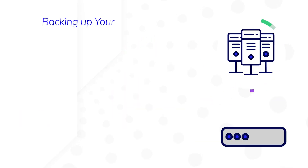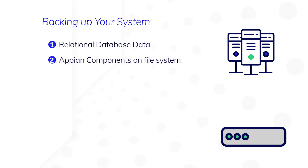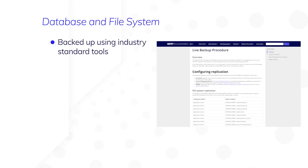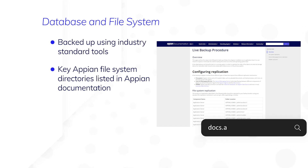You need to backup three categories of data in order to later start up a recovery site: the data stored in all relational databases, Appian components on your server file system, and your internal messaging service. Your databases and file system can be backed up using industry-standard backup methods and replication tools. Appian does not recommend any one tool or technique, but make sure you backup the data stored in the directories listed in the Appian documentation.